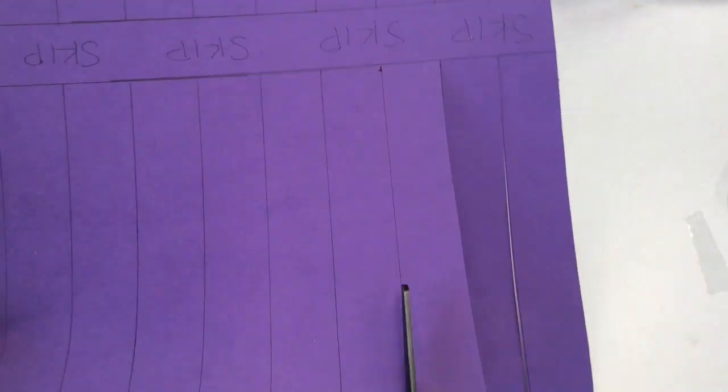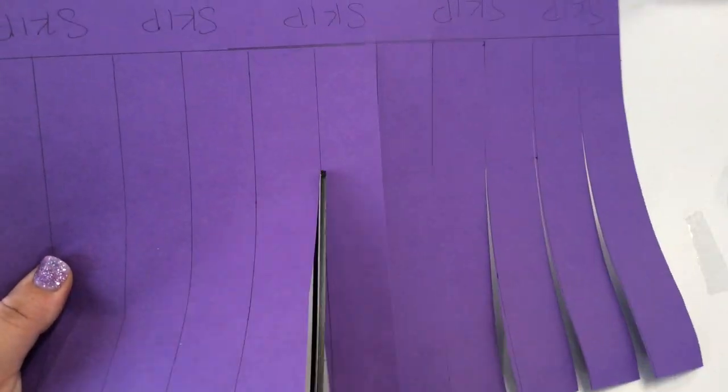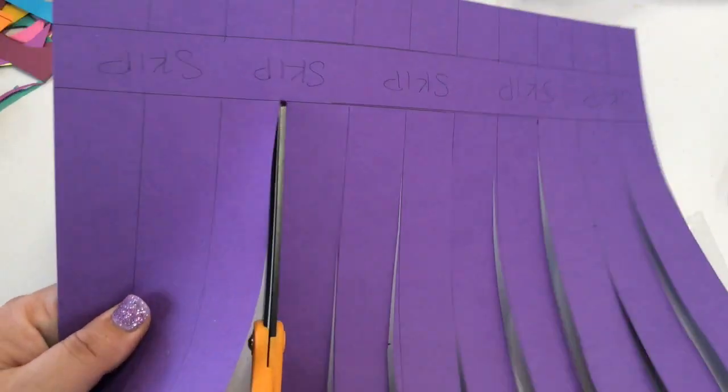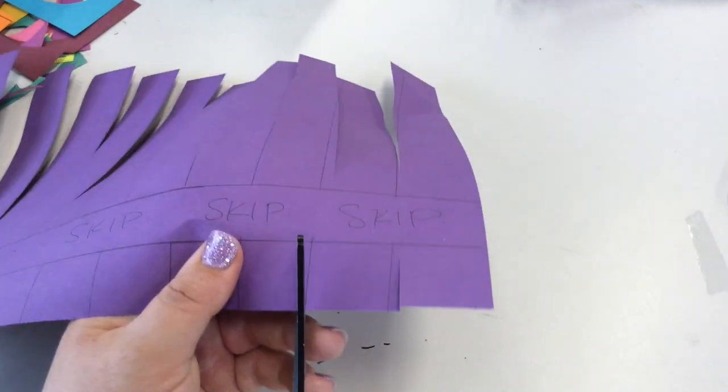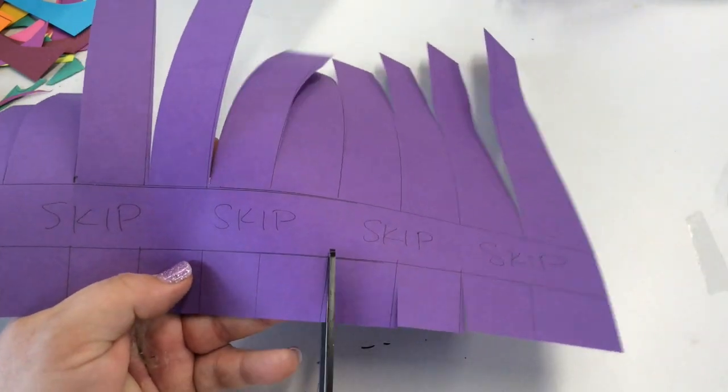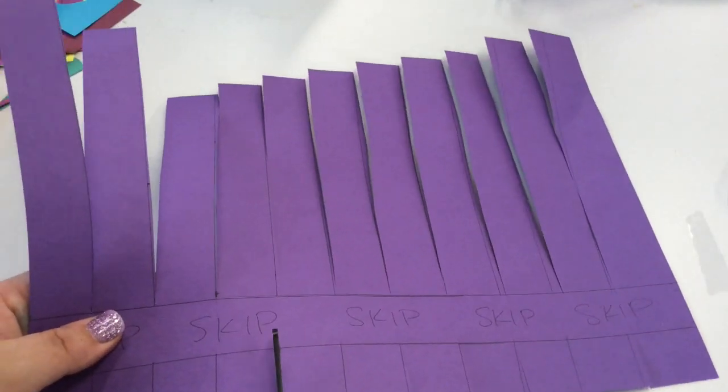Next, grab your pair of scissors and cut on the long lines, and make sure you stop where it says skip. Turn your paper around and cut on those really short lines, making sure you stop at the skip line.